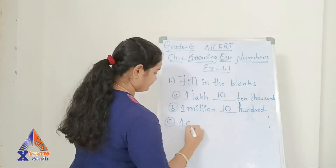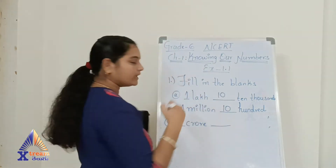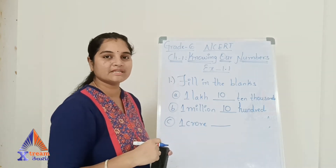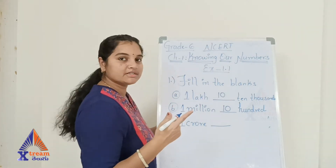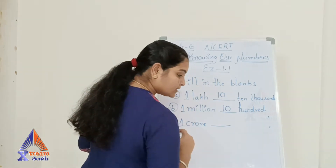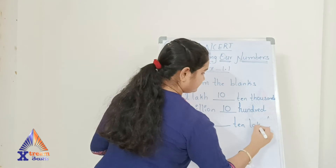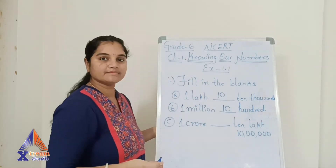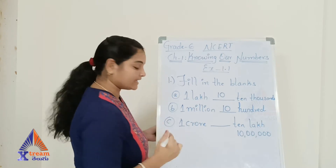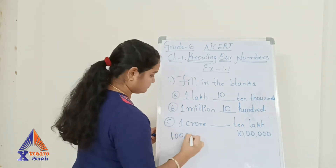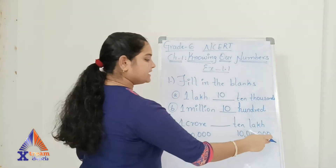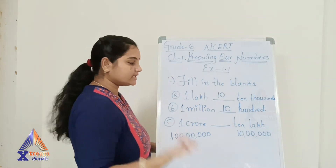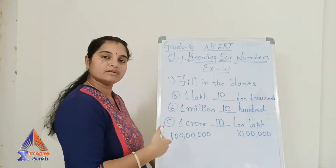Question C: one crore is how many ten lakhs? Ten lakh has six zeros; one crore has seven zeros. You need one more zero added to ten lakh to get one crore — that means multiplying by 10. So ten ten-lakhs will make one crore, and the answer is again ten.